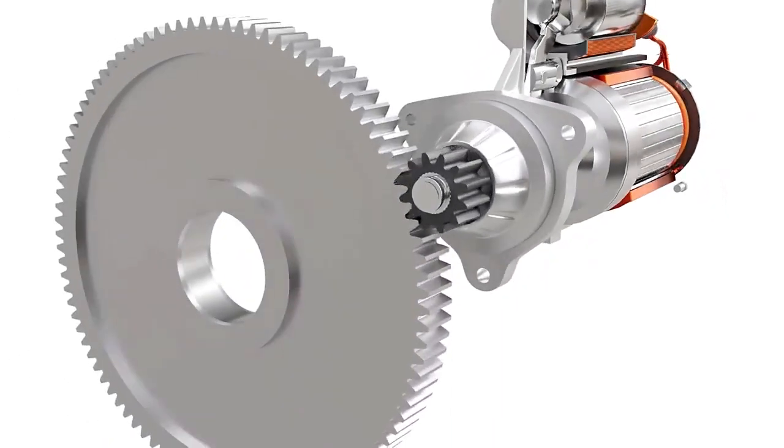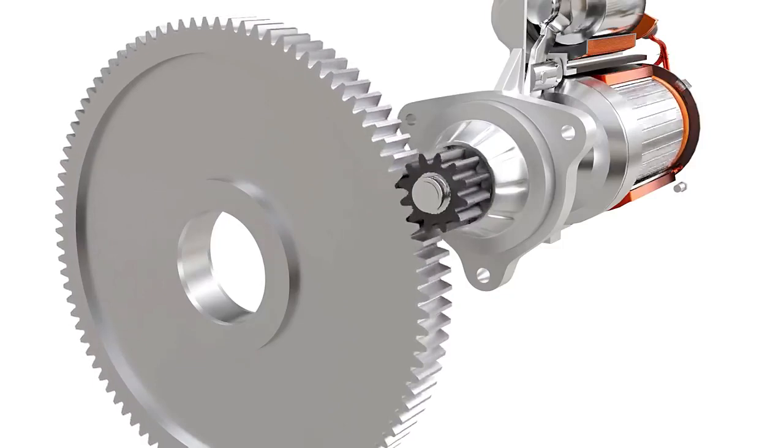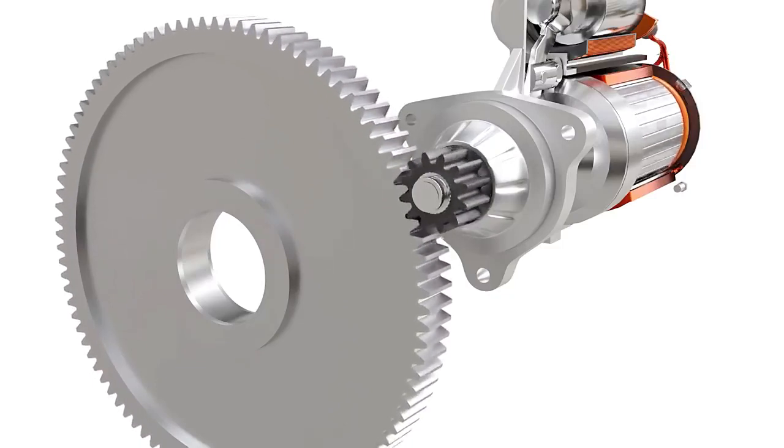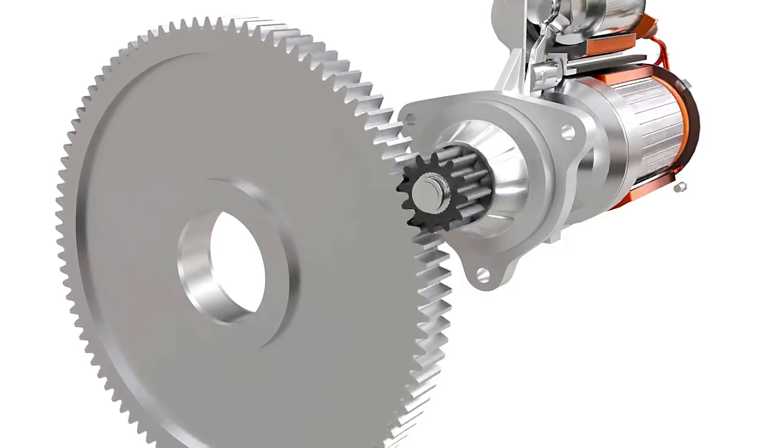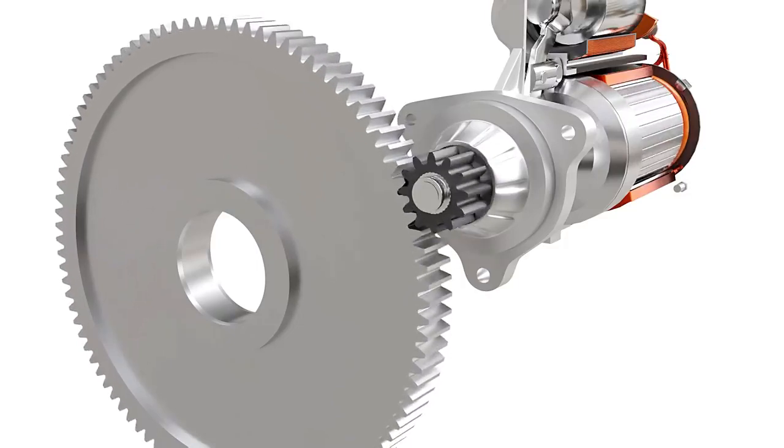We can observe that the pinion is considerably small compared to the flywheel. The gear ratio of the flywheel and pinion is generally from 15:1 to 20:1. The high torque obtained from this gear reduction is still insufficient to crank the engine.